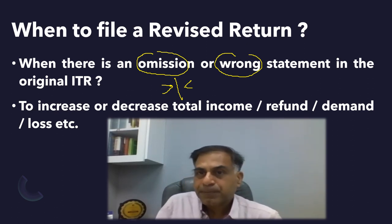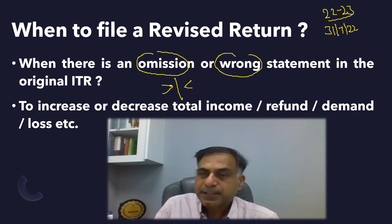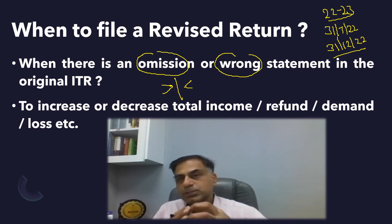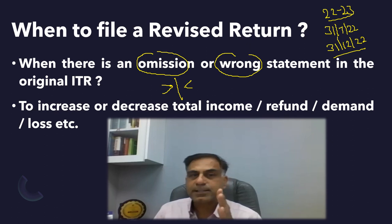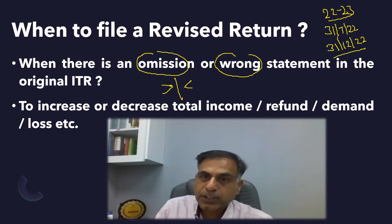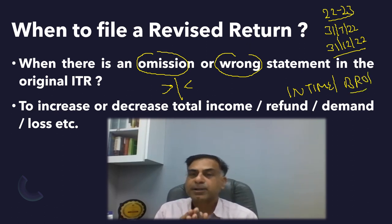To elaborate through an example: for assessment year 2022-23, the due date of filing the original return was 31st July 2022. Say somebody filed their return by this date and thereafter found there was some income which could not be reported. They may file a revised return, and the last date of filing the revised return was 31st December 2022. One very important aspect: not only an original ITR filed in time may be revised, but even a belated return may be revised, if the time limit is available as per Section 139(5) of the Income Tax law.